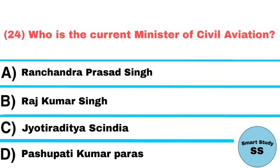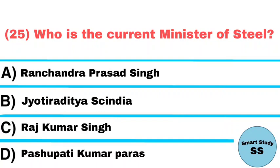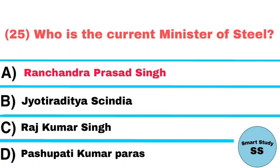Question number 24: Who is the current minister of Civil Aviation? Answer: Jyotiraditya Scindia. Question number 25: Who is the current minister of Steel? Answer: Ramchandra Prasad Singh.